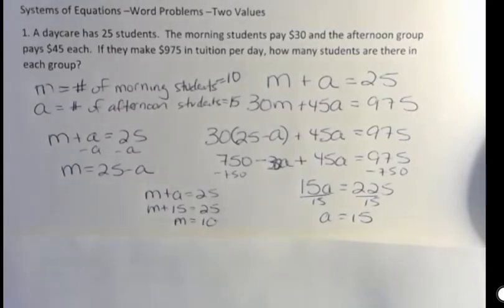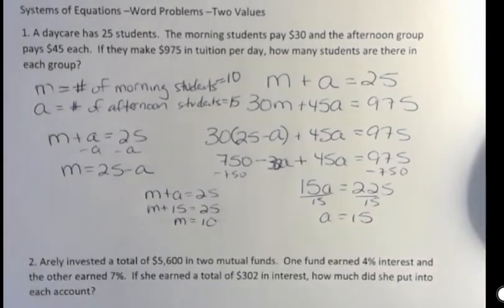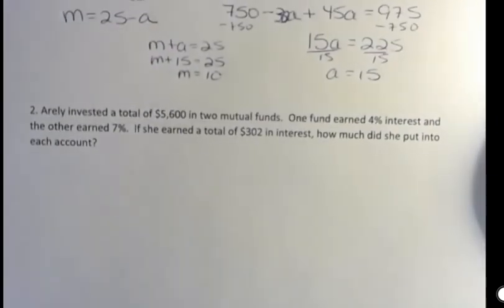It's important to know what you found. So if you just say 10 and 15, but you don't say which is which, that's not telling me that you understand the answer to the question. Okay, let's look at another one where you have two different values.